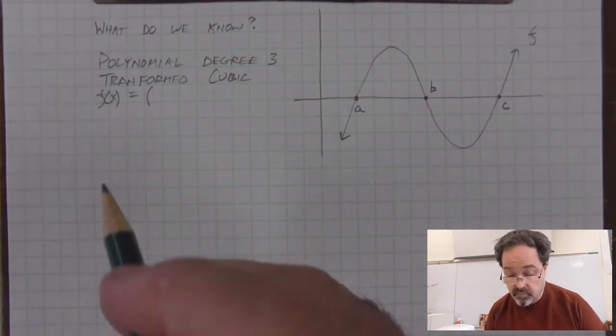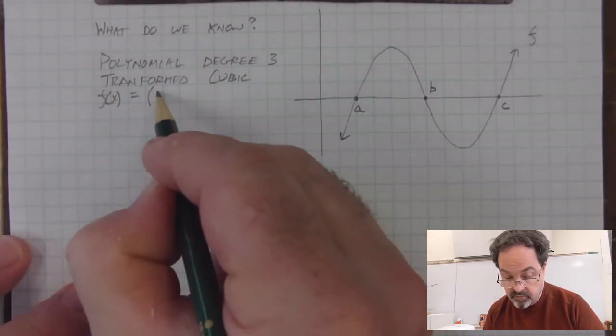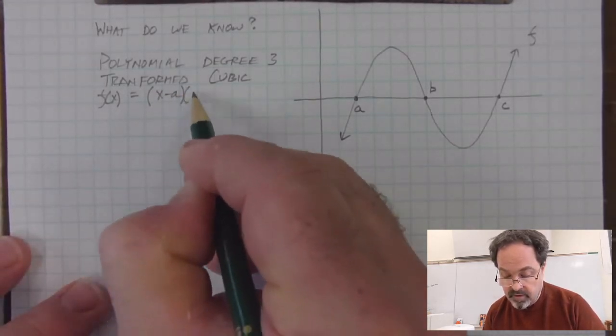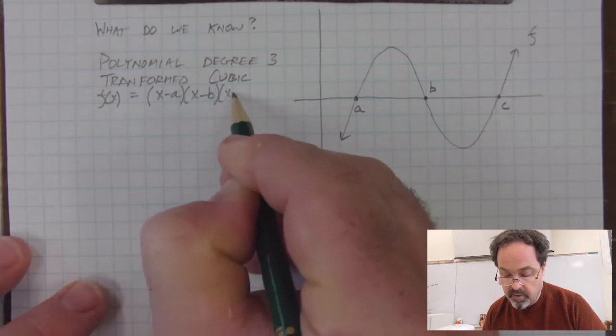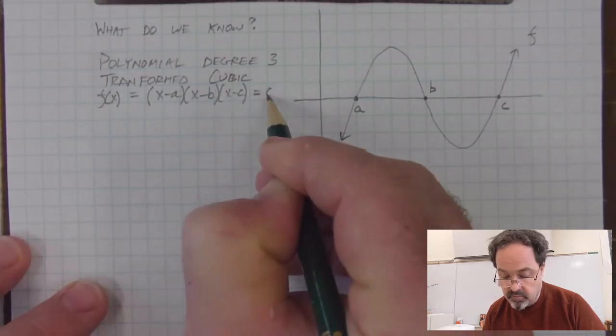Which allows us to put the function in a factored form, x minus a times x minus b times x minus c. If this is equal to 0.